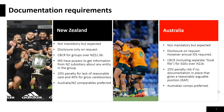Both New Zealand and Australia have extensive information-gathering powers and can now request information from offshore parties of local companies. The OECD guidelines and the three-tiered approach to documentation for significant global entities have been adopted by both countries as the foundation for transfer pricing documentation. Both have imported the OECD guidelines into their domestic legislation. Australia has additional guidance with a five-question process which broadly aligns to the nine-step OECD approach.